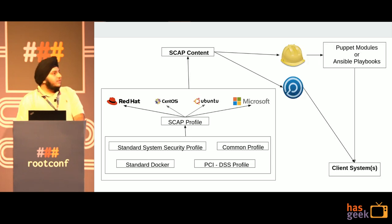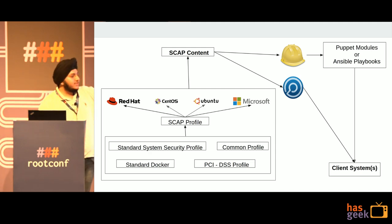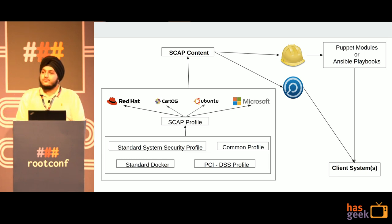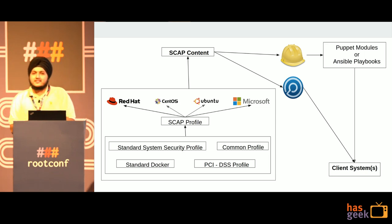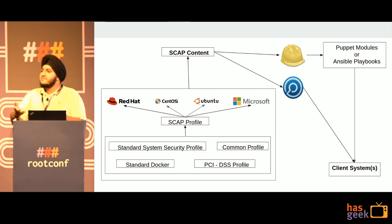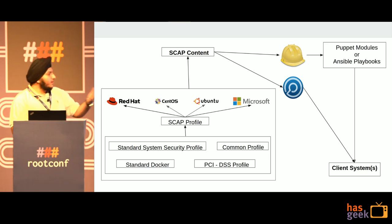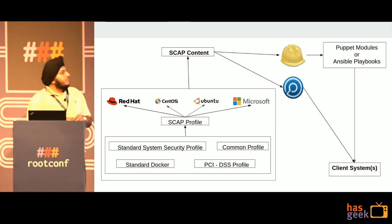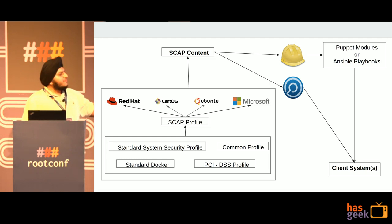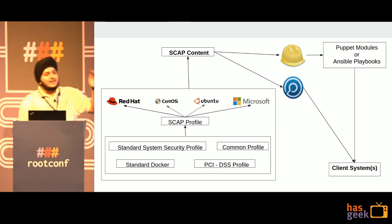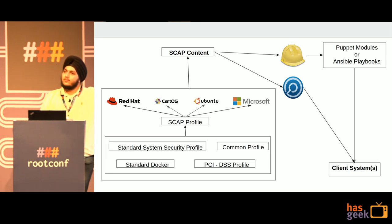How does OpenSCAP work? There's a diagram here showing a few profiles: PCI DSS profile, which is used by payment gateways; Standard Docker profile, if you're using Docker in your infrastructure; and Standard System profile for normal systems — CentOS, Ubuntu, Debian, Red Hat, Fedora, or Windows. These collaborative profiles are known as SCAP profiles, distributed across operating systems. A collection of these profiles is known as SCAP content, and this content can be directly applied to your client systems with the help of OpenSCAP.